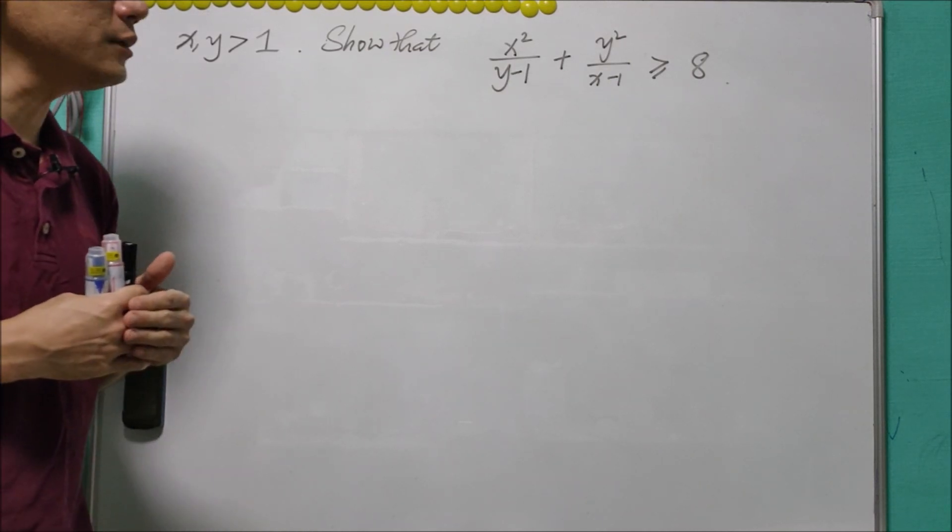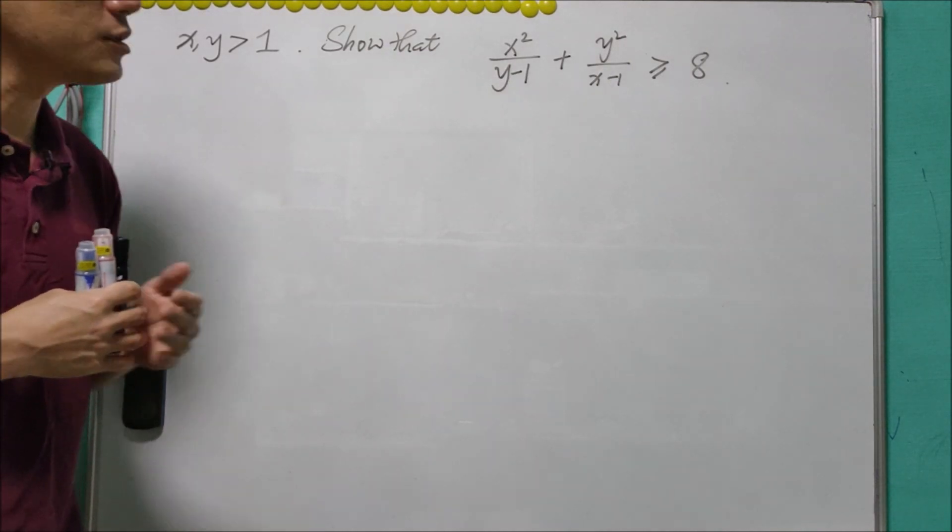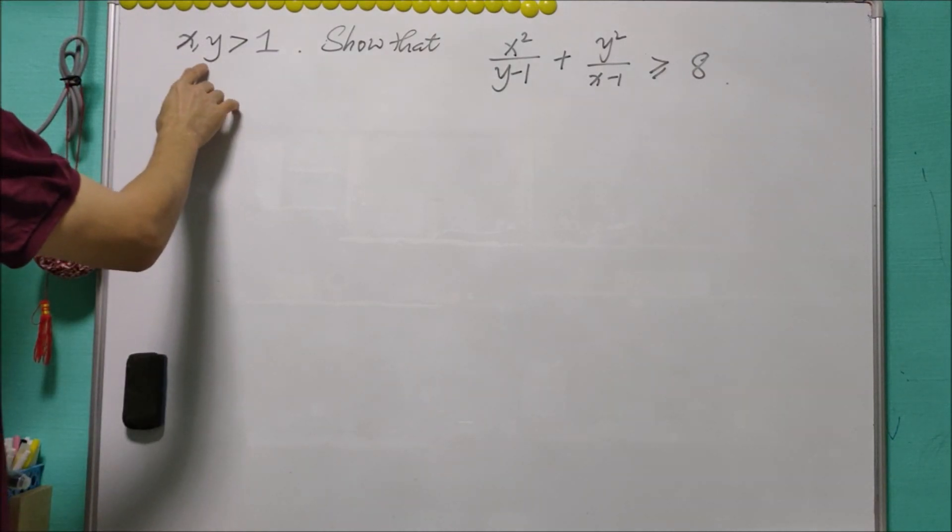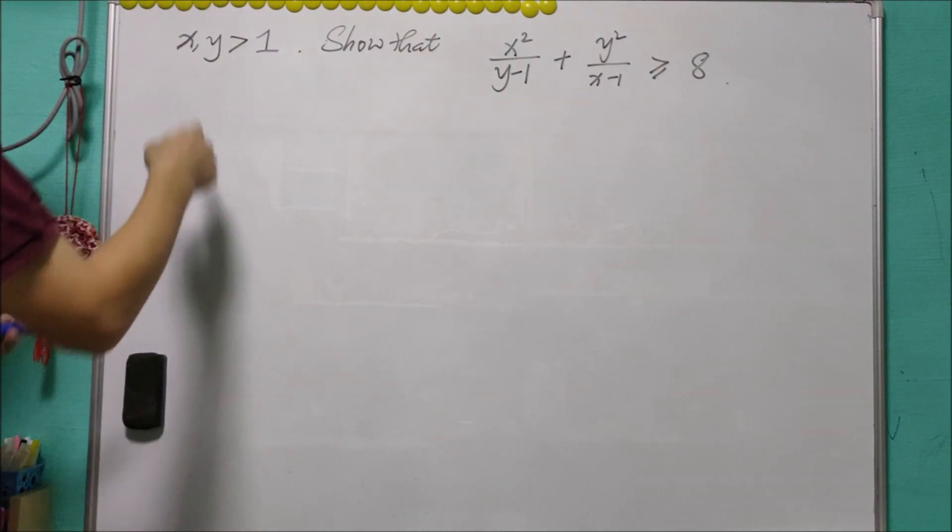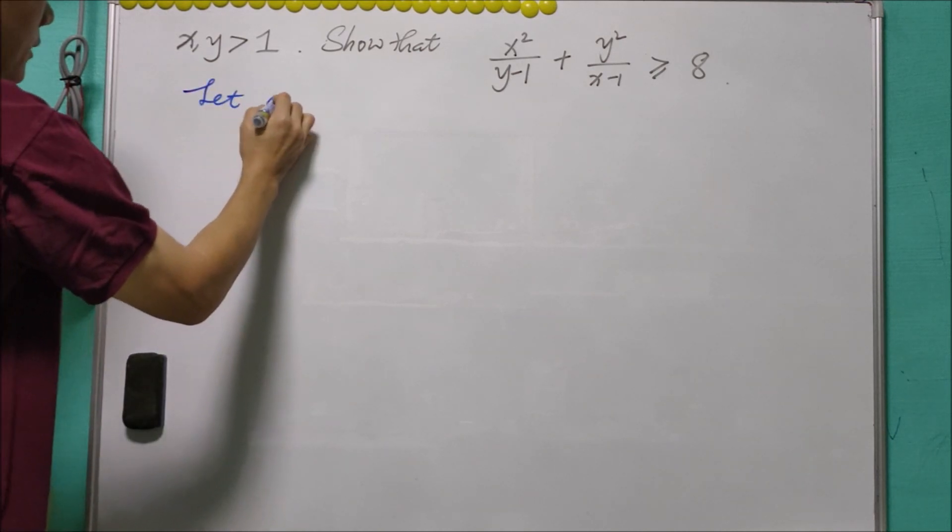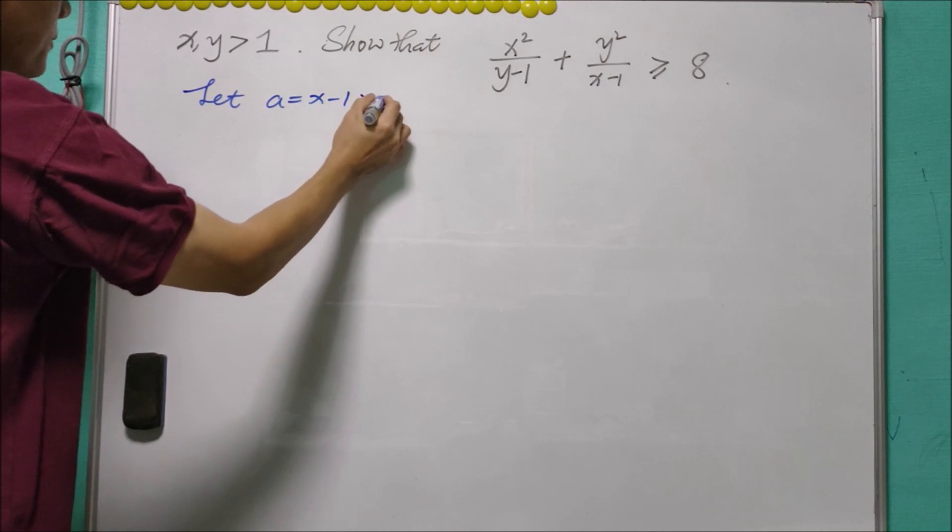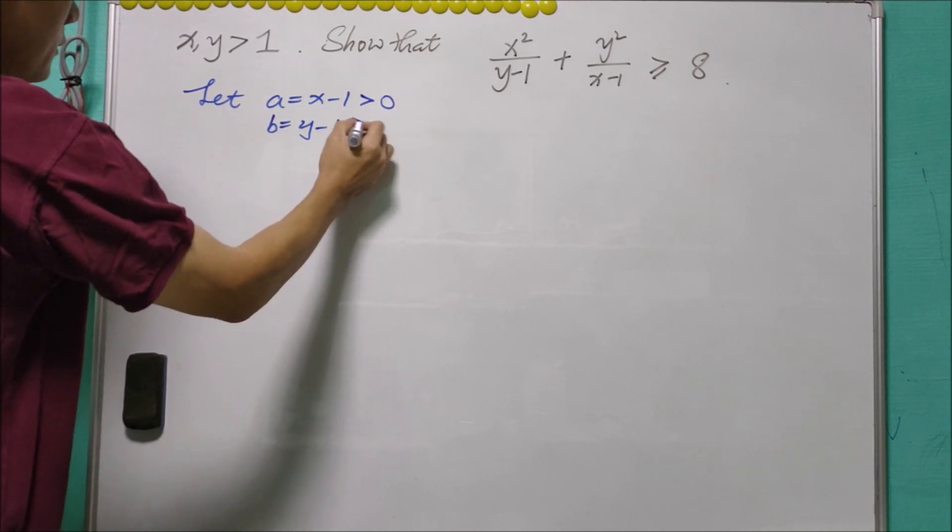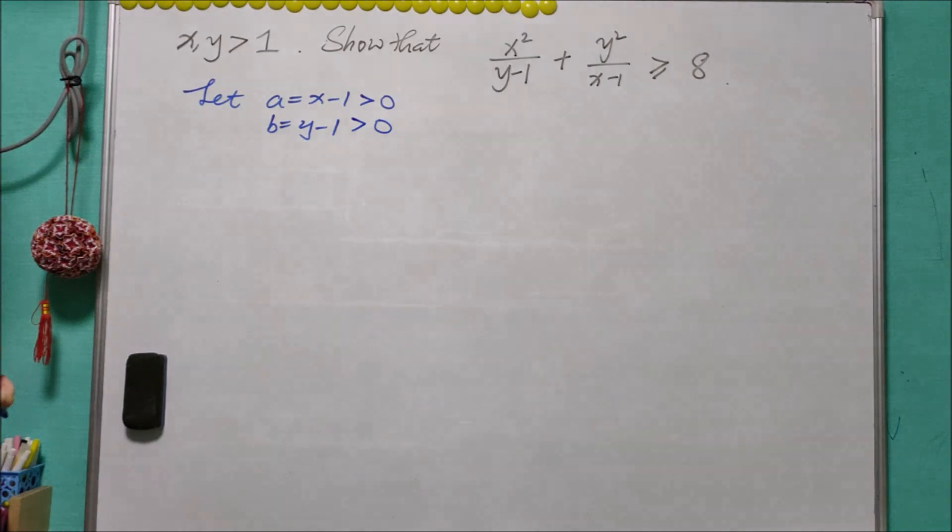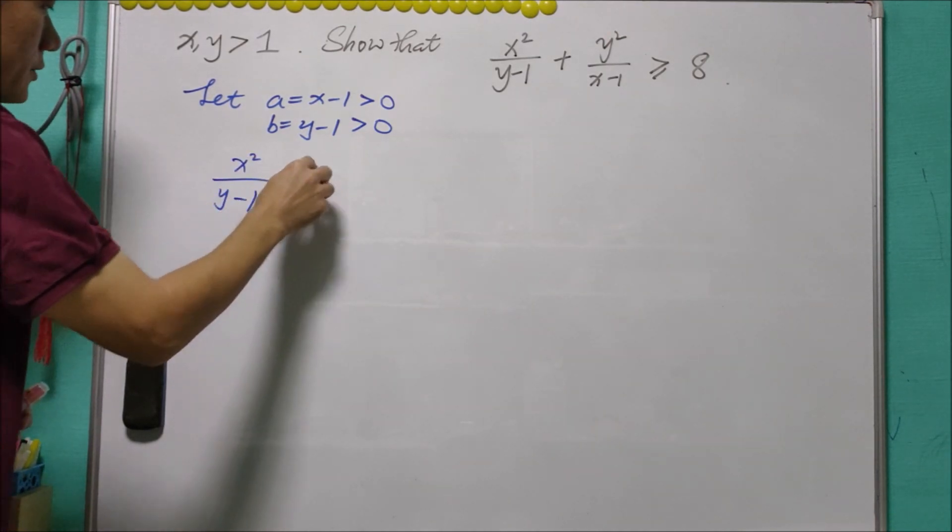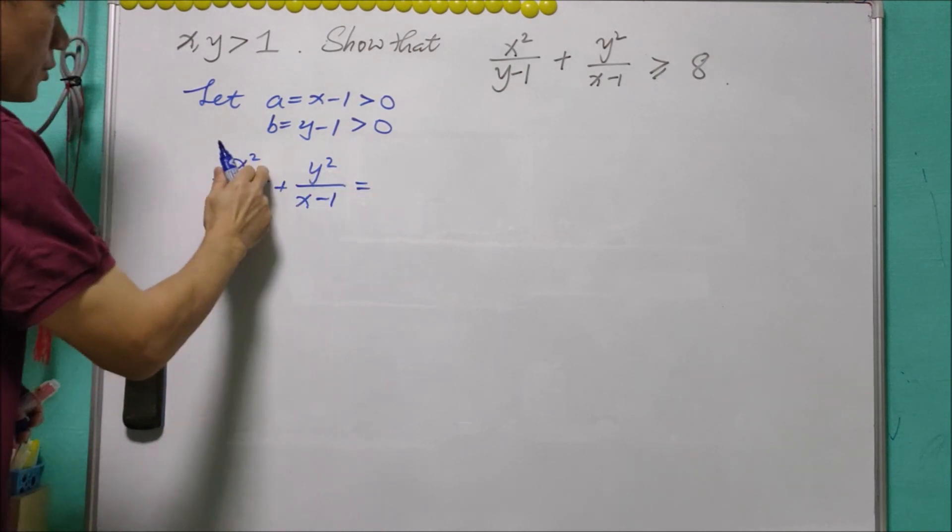...the most elementary ways to solve it, that is using AM-GM inequality. Since each of X and Y is more than one, we may let a be X minus one, and therefore a is positive, and b is Y minus one, and therefore b is also positive.